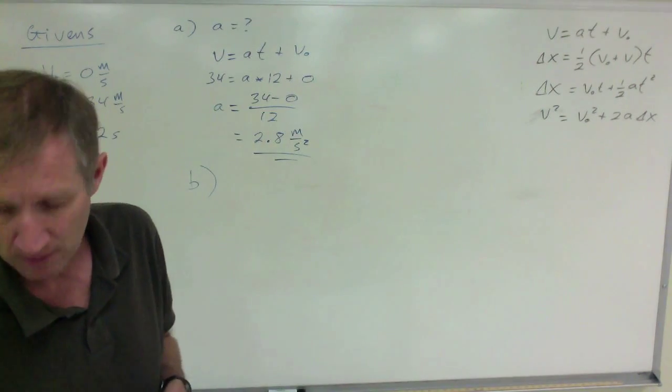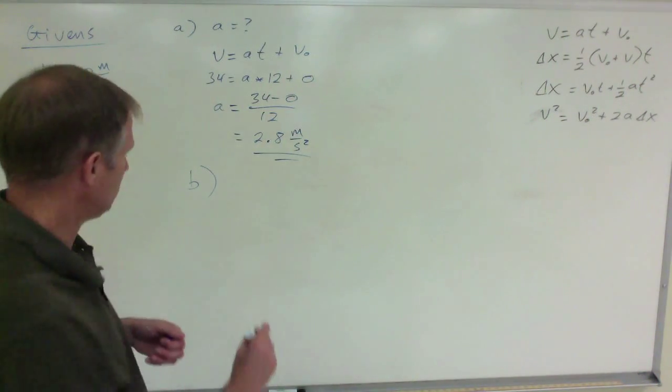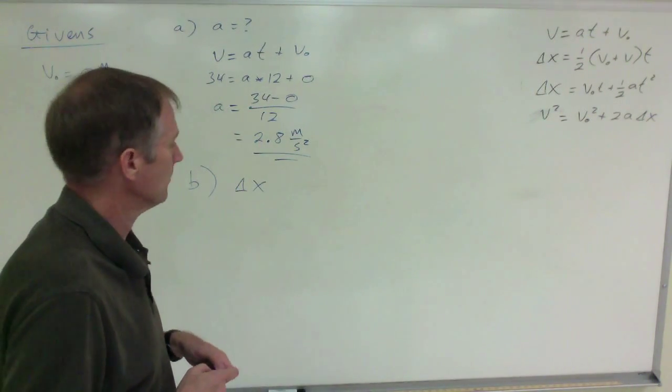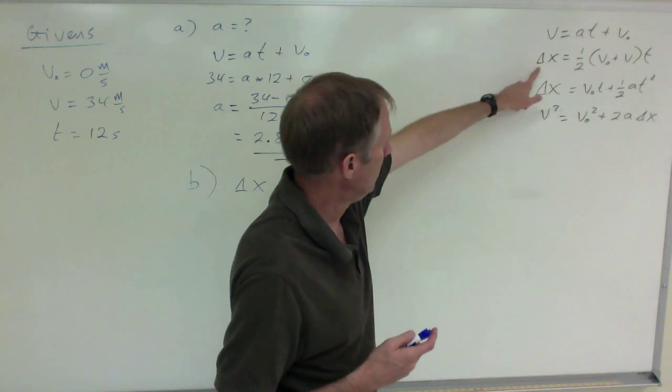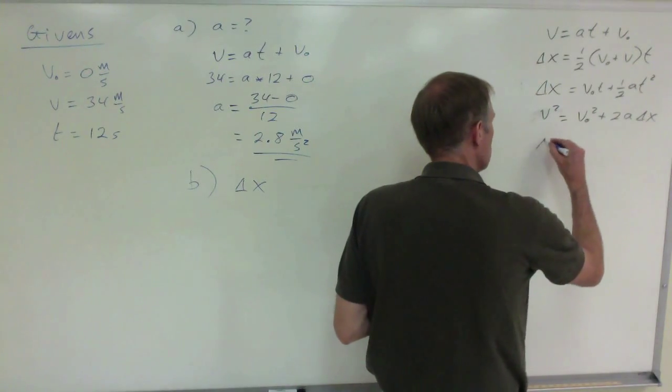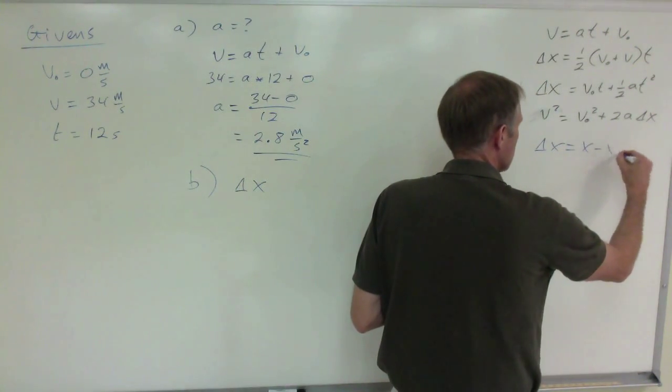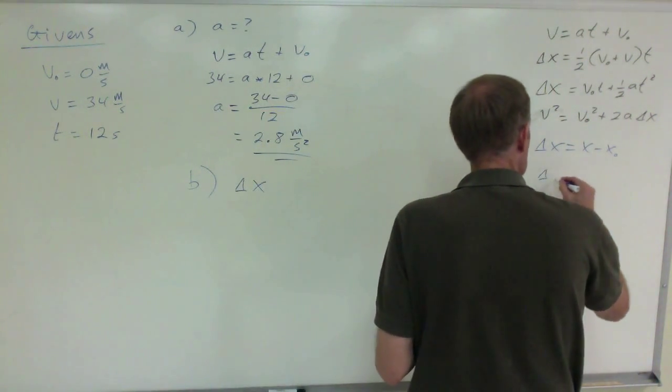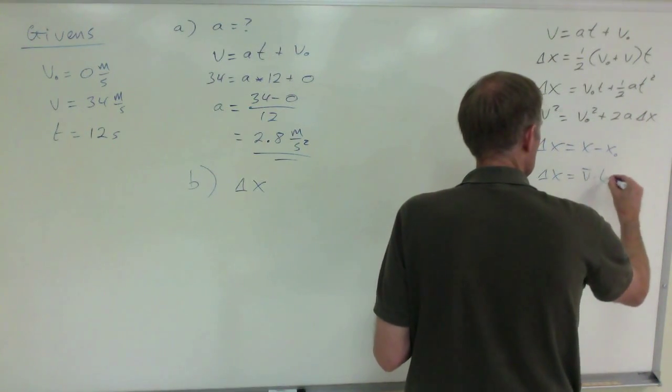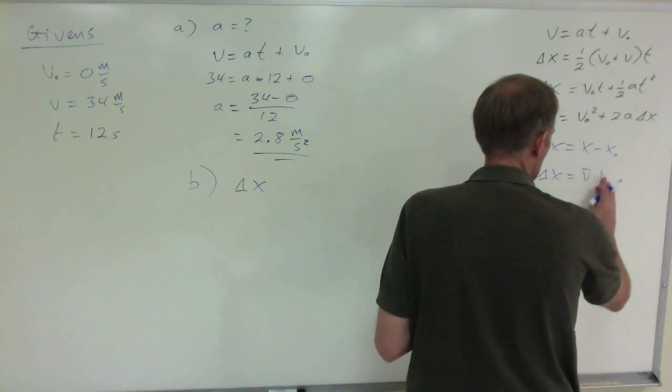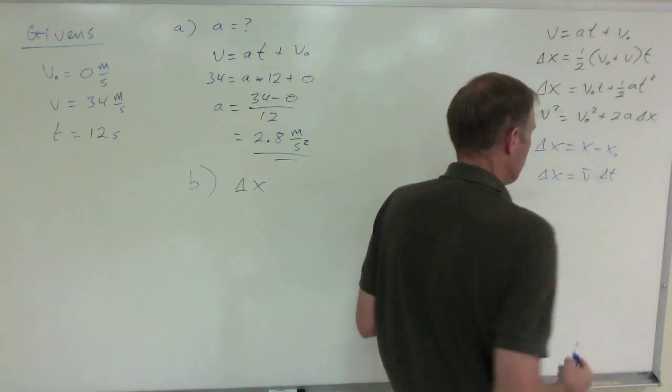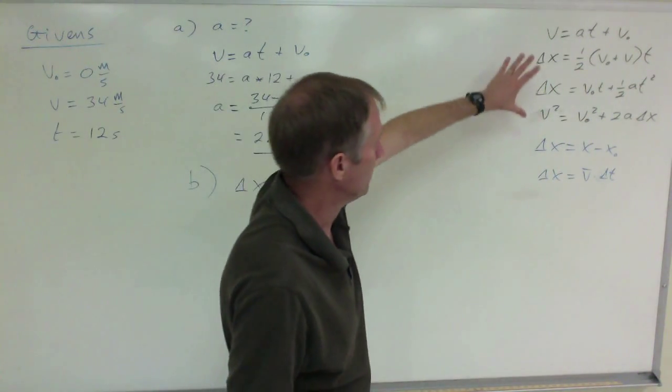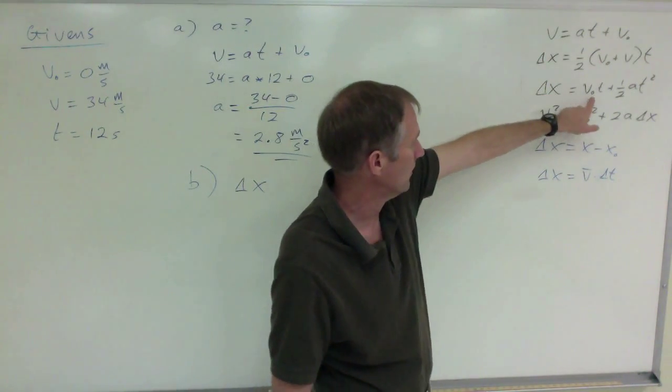To find part B, the displacement, that's delta x. Well, you have a bunch of different equations for displacement. You have displacement right here, right here, right here. You know by definition displacement is x minus x sub 0, but that doesn't help because we don't know x and x sub 0. You know that displacement is average velocity times time. That doesn't help, we don't know the average velocity. There are all sorts of different equations. The easiest one to use, you can use this one because you know the initial velocity, the time, the acceleration.